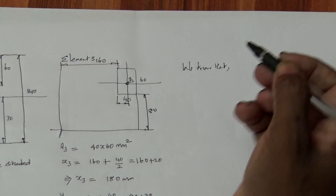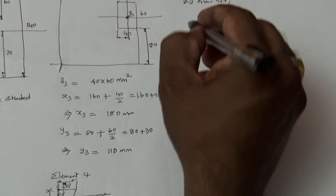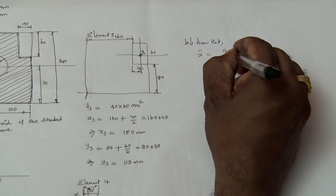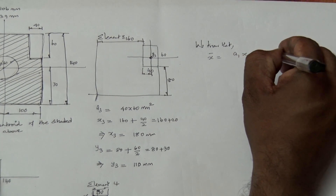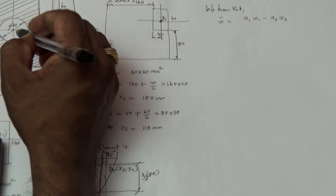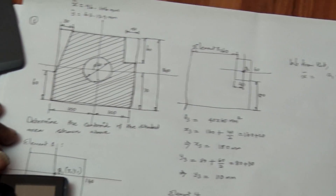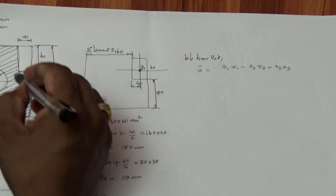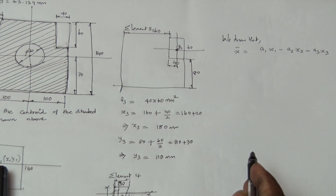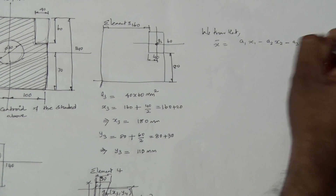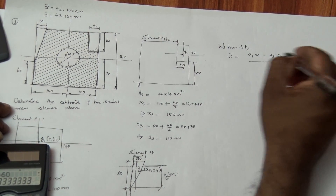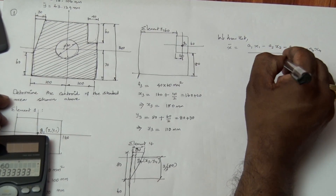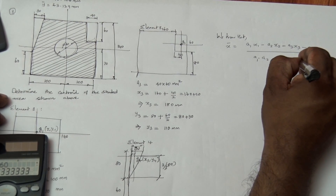We know that X-bar is equal to (A1·X1 minus A2·X2 minus A3·X3 minus A4·X4) divided by (A1 minus A2 minus A3 minus A4). The circle, the small rectangle, and the triangle are all subtracted because they must be removed to obtain the shaded area.